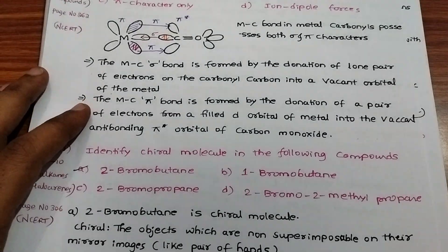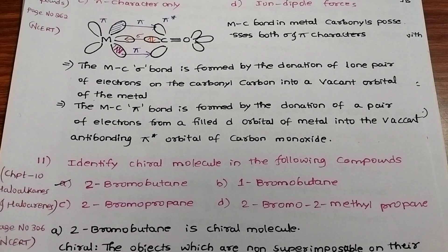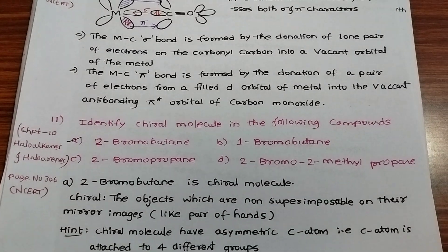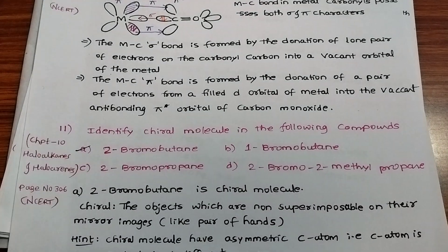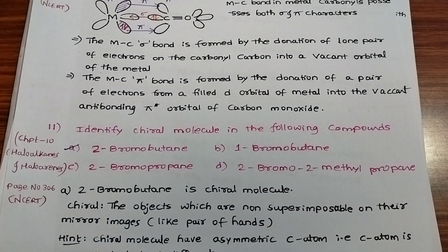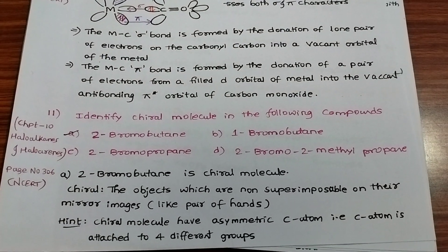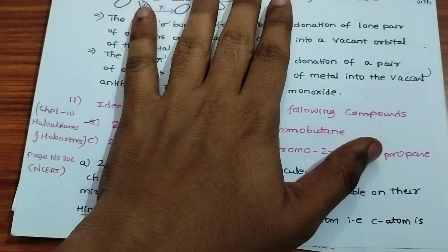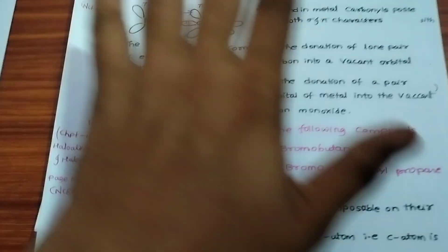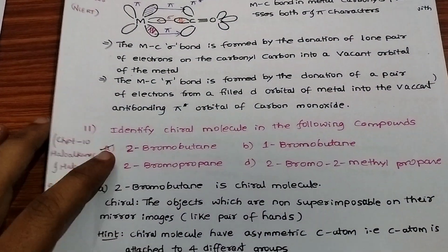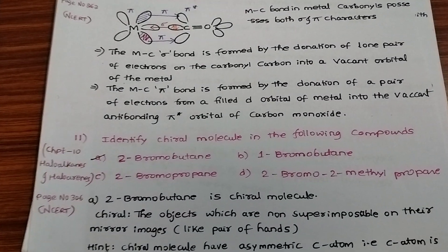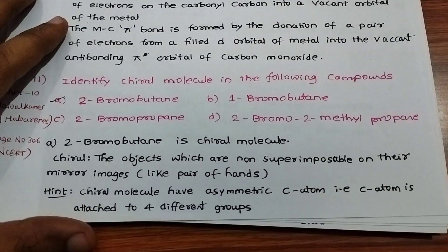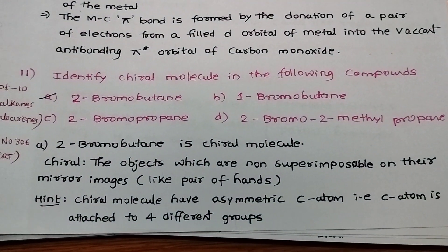Next: identify the chiral molecule in the following compounds. The answer is 2-bromobutane, which is a chiral molecule. Chiral means objects which are non-superimposable on mirror images, like a pair of hands. To avoid confusion, one hint: find the asymmetric carbon atom.